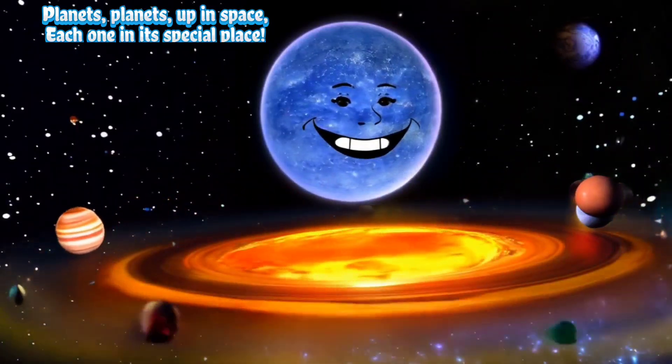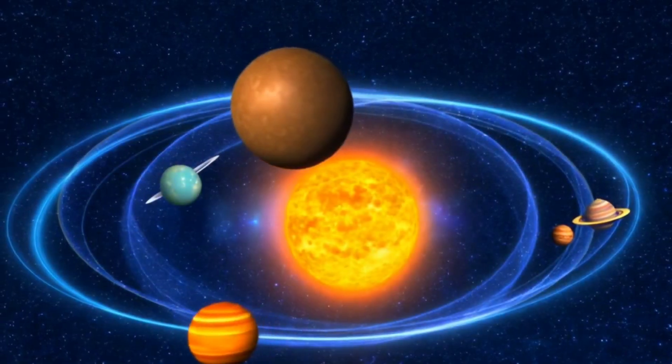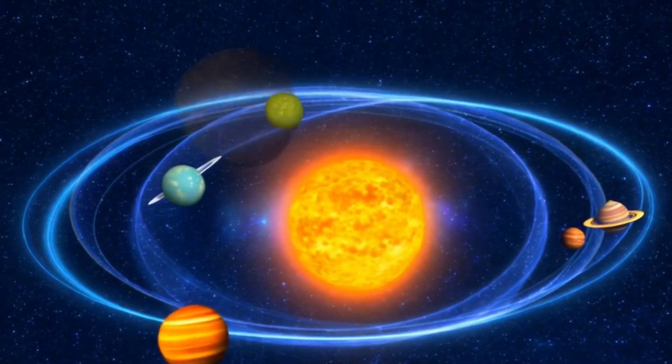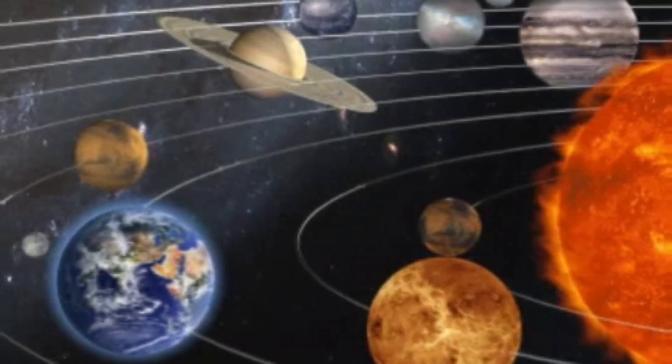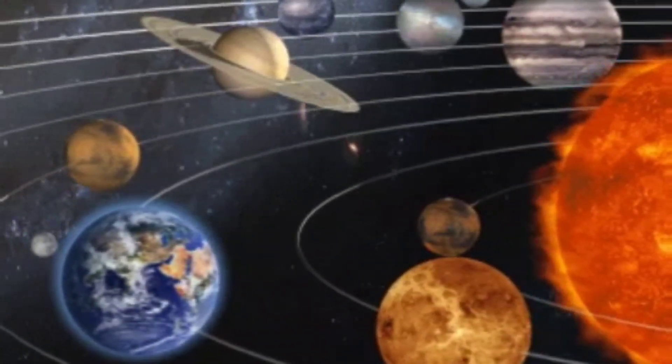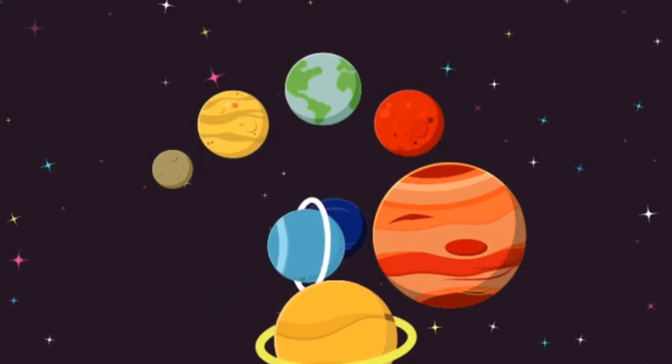Planets, planets, up in space. Each one in its special place. Round and round the sun they go. Let's learn more, nice and slow.